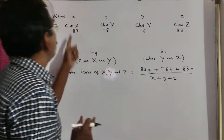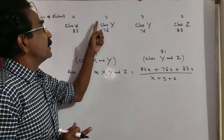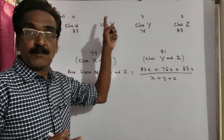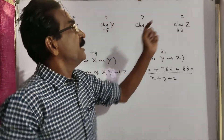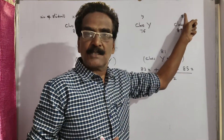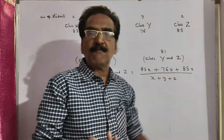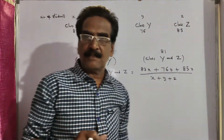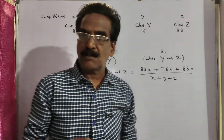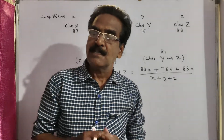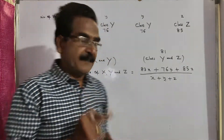So here you get small x is to small y, and here you get small y is to small z, from which you can find small x is to small y is to small z.